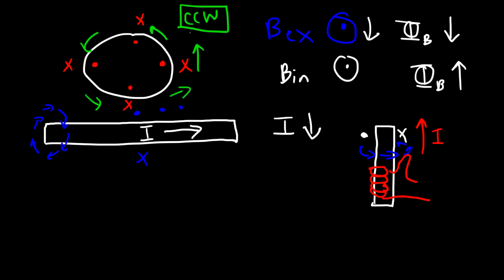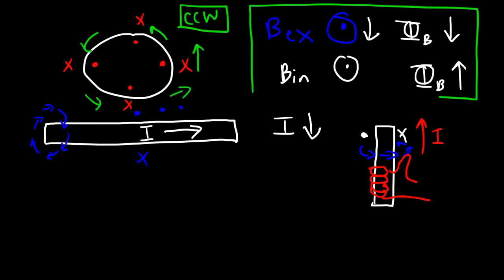That's how you use Lenz's Law to determine the direction of the induced current in the coil. Remember, the system is going to try to maintain a state of equilibrium. If you try to increase the magnetic flux flowing through a coil, the system generates an induced current that creates its own induced magnetic field to decrease the increasing flux. If you try to decrease the flux, the system wants to bring it back to equilibrium by increasing it. That's the basic concept behind Lenz's Law.